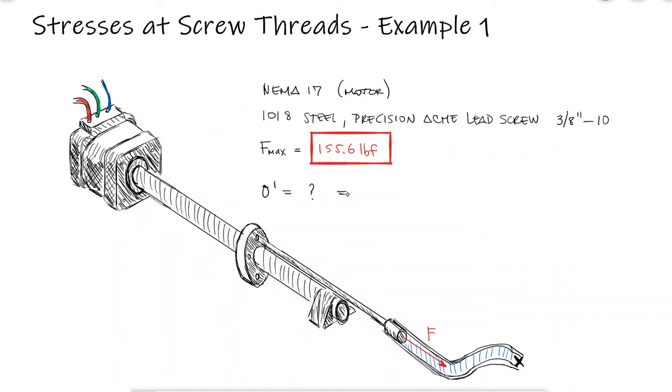This is the first example for the stresses at screw threads main video, link below. We know that the von Mises stress can be calculated if we know the values for the existing stresses on our 3D stress element.